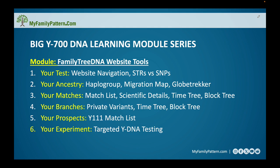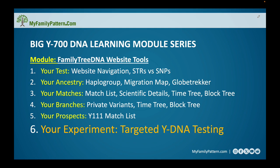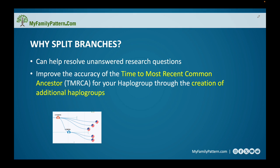This is the last of the six modules, and we're going to use targeted DNA testing — being careful and methodical about who we select to participate in taking a Y-DNA test — to the end of answering a specific research question. We're going to talk about splitting branches. The image below is a snapshot from the time tree. We want to get a Y-DNA tester, another male who descends from a specific line, whose results might help us answer specific genealogical questions. If we do this strategically, we can improve the accuracy of our results.